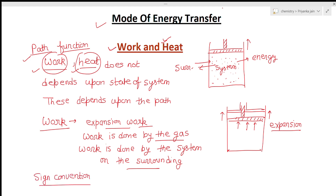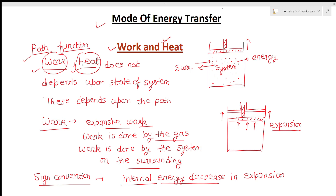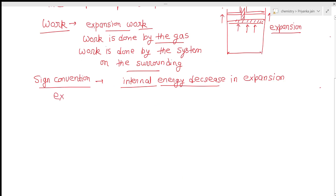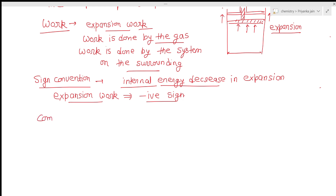Now see the sign convention for expansion work. When the piston moves outside, the volume increases. Whenever volume increases, the internal energy decreases. Whenever the internal energy decreases, we take a negative sign. So in expansion work, a negative sign is used — whenever work is done by the system on the surroundings, there is a negative sign because internal energy decreases.